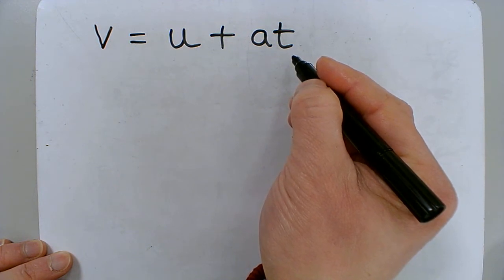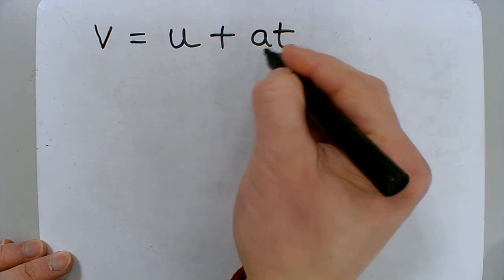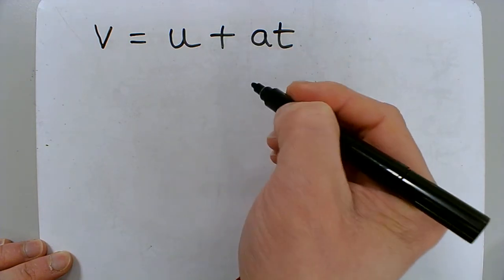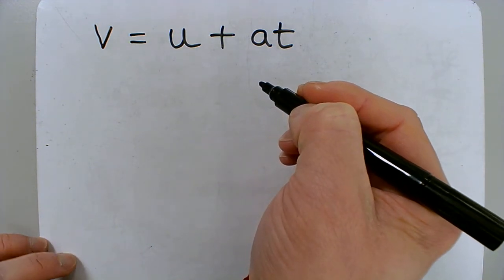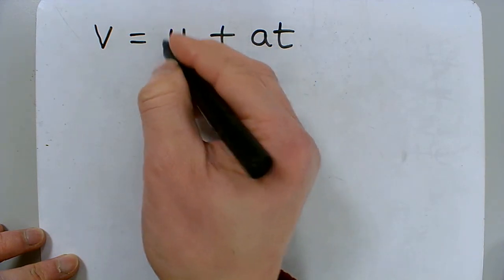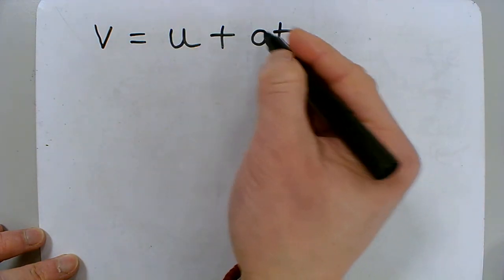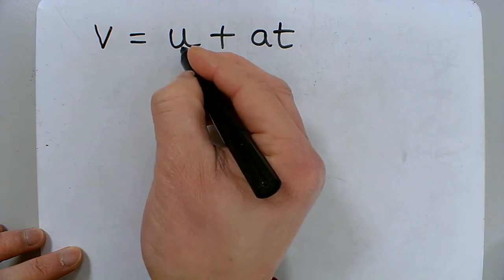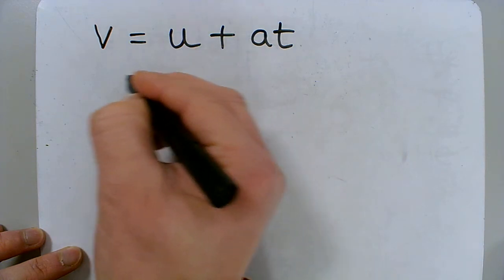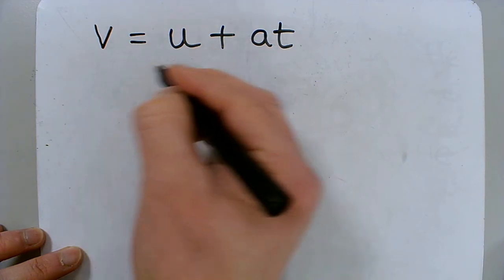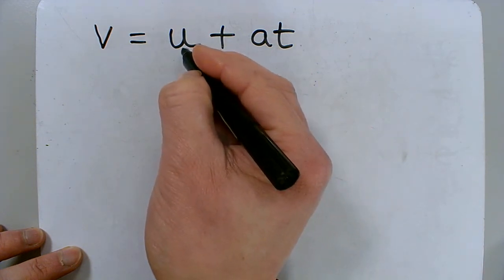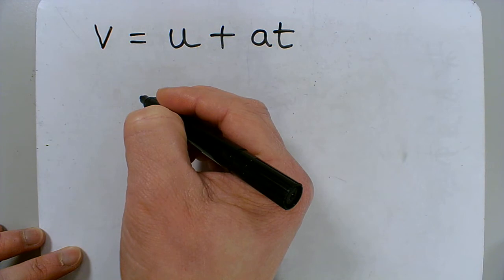And you might be asked a question where you have to find a, the acceleration. And in order to do that, I need to get a on its own. So the first thing that we need to do is get rid of the ones that we don't need. So I don't need u on this side because I want a on its own. So the way to do that is I take u over to this side. And if we change sides, we change sign. At the moment, u is a positive value. So when we take u onto this side, it becomes negative.